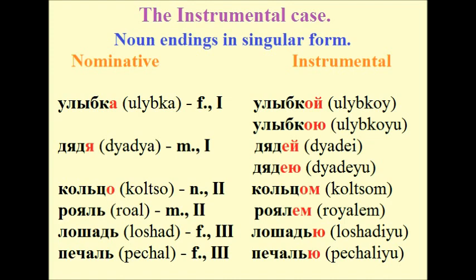Singular noun endings on the slide: 'Smile' — Улыбка → Улыбкой / Улыбкою. 'Uncle' — Дядя → Дядей. 'Grand piano' — Рояль → Роялем. 'Horse' — Лошадь → Лошадью. 'Sadness' — Печаль → Печалью.